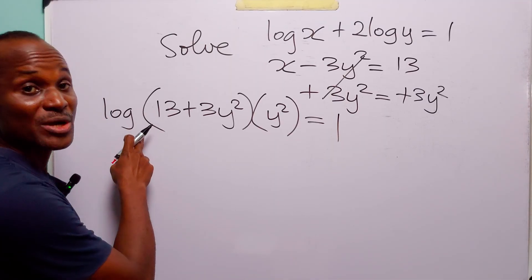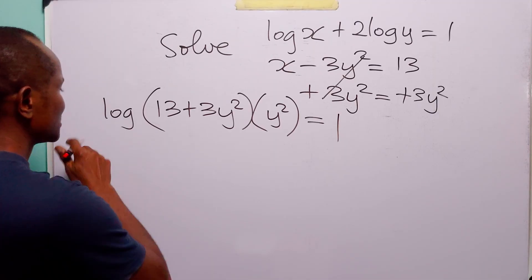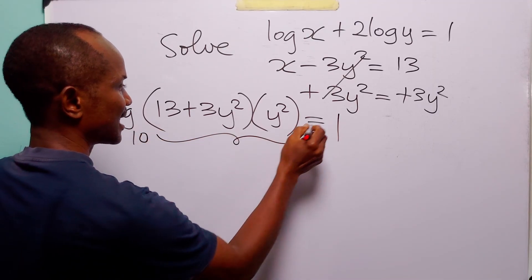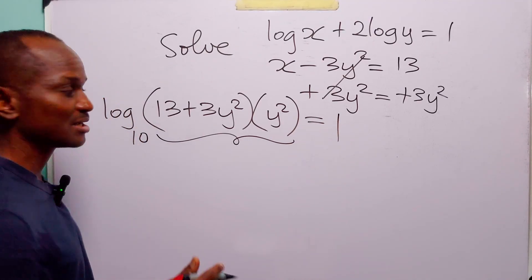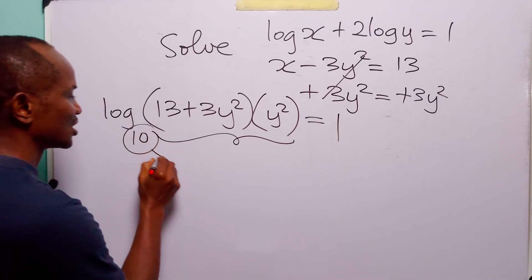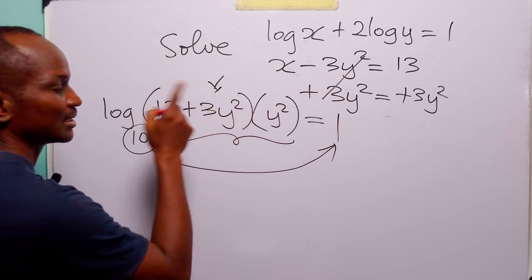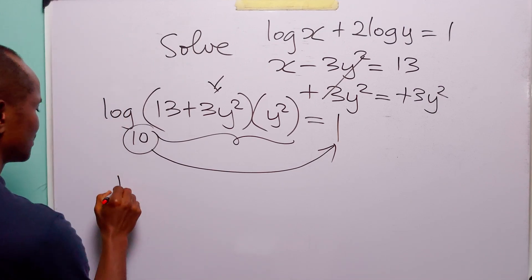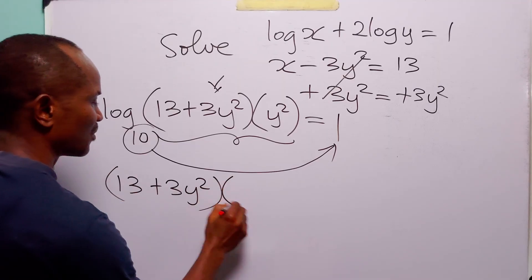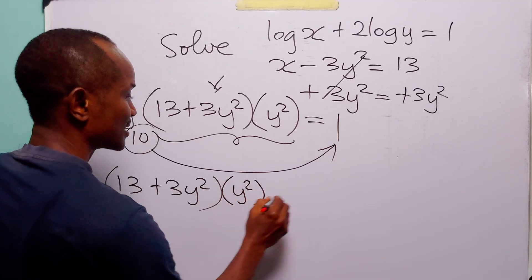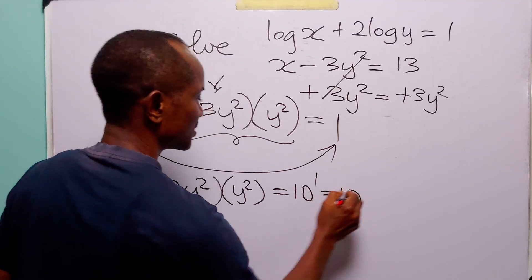Remember that when we write log without specifying the base, it means we are working in base 10. So this is log to base 10, and this is equal to 1. Of course, you know that this statement simply means that 10 to the power 1 is equal to this argument. So we have that (13 plus 3y squared) multiplied by y squared is equal to 10.